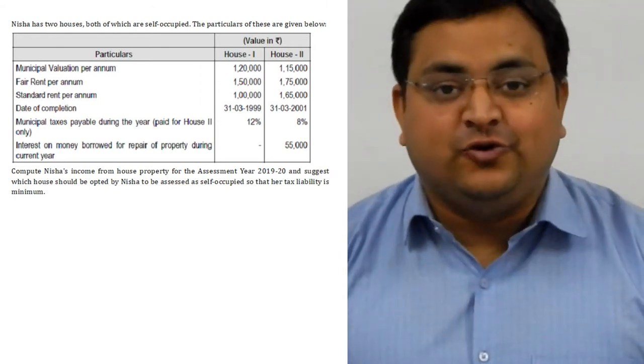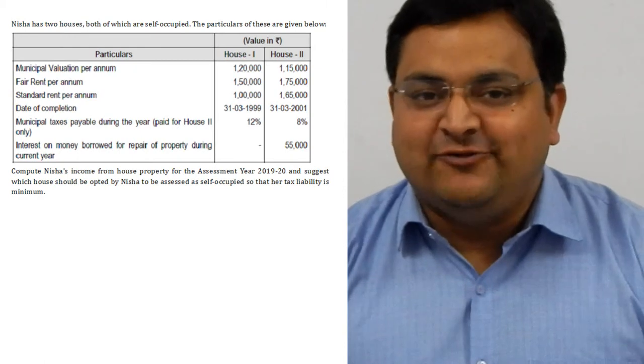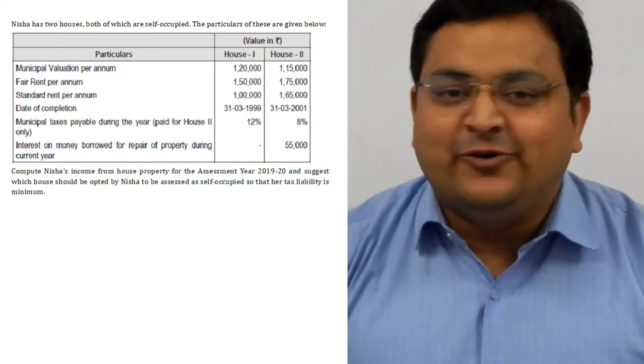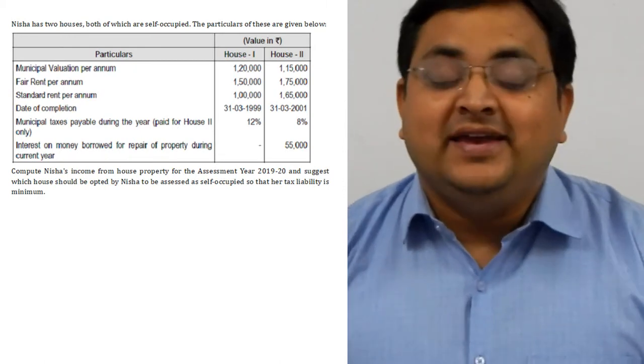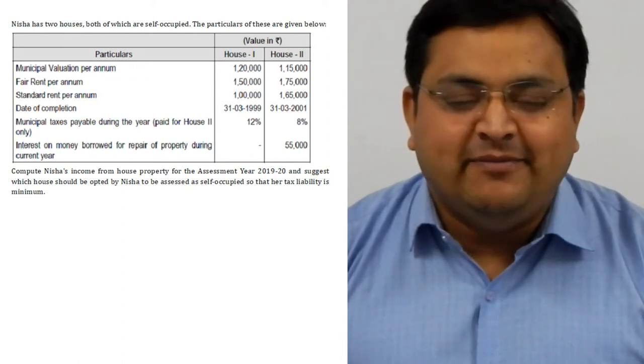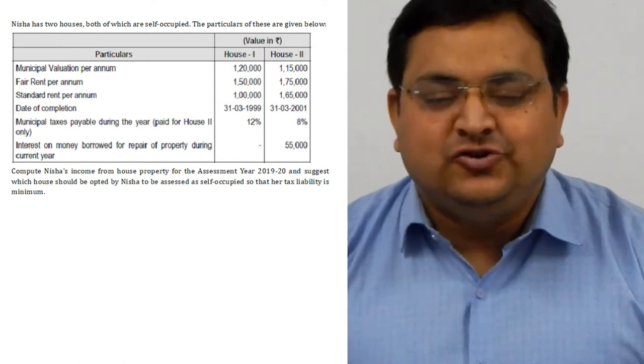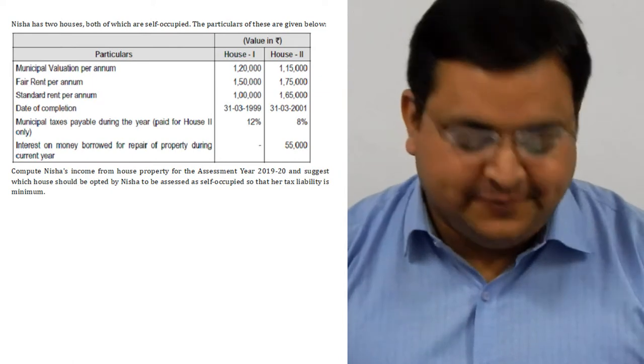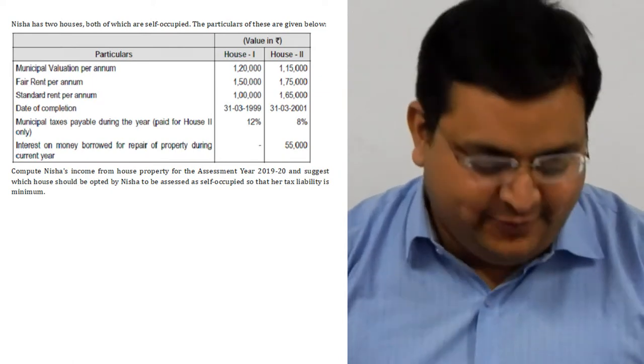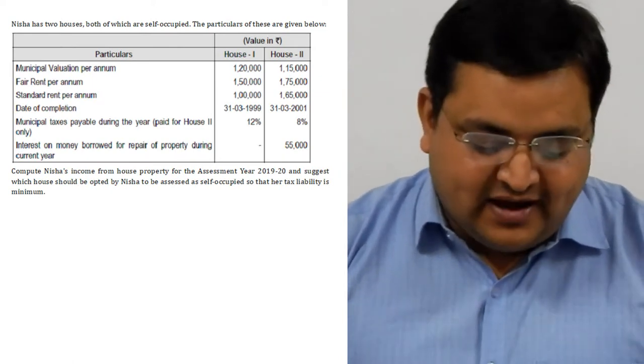Nisha has two houses, both of which are self-occupied. Only one house should be self-occupied and the second house should be treated as deemed let out. The particulars of which are given below.